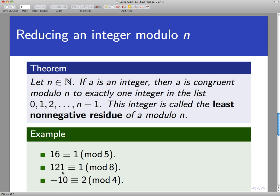So we would say that 121 reduces to 1 mod 8. This doesn't seem like reducing because we're going from a negative integer to a positive one, but negative 10 reduces to 2 mod 4, because 2 is the smallest non-negative integer to which negative 10 is congruent mod 4.